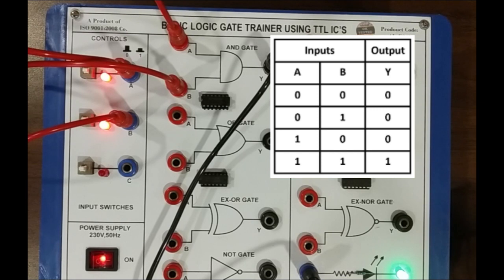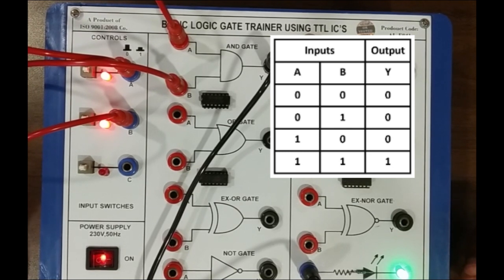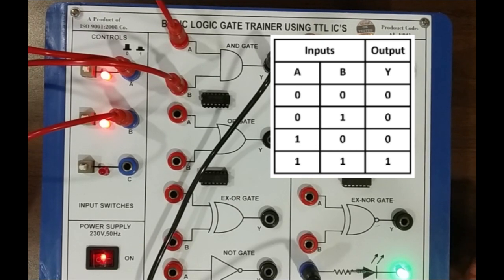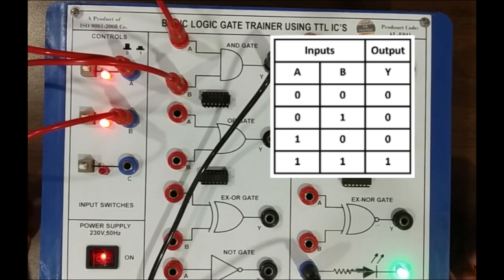This way we can simulate our AND gate. As per the truth table, the conditions are verified: zero, zero — output zero; zero, one — output zero; one, zero — output zero; but now one, one — output is high. So this way we can simulate our AND gate.